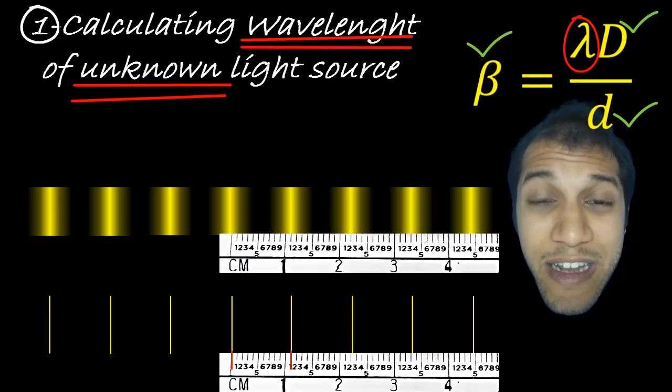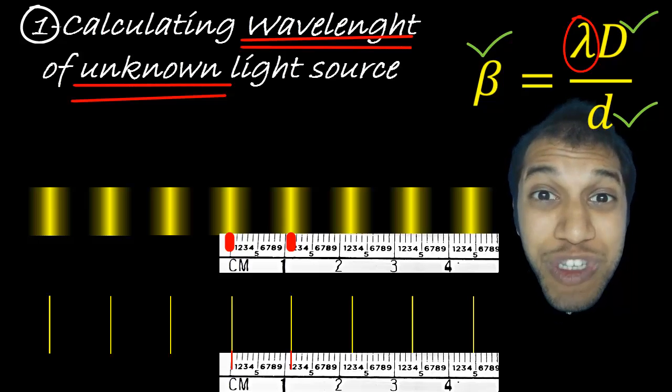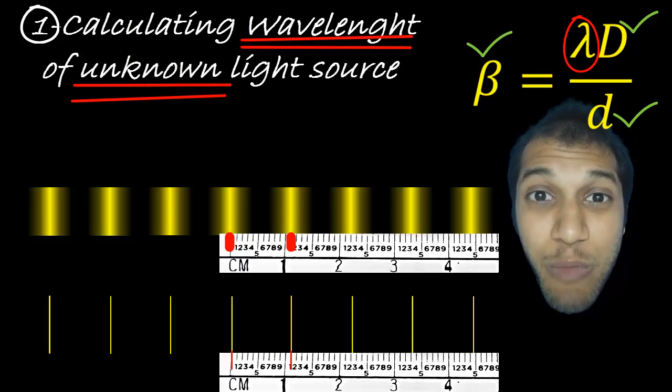In the double slit, it is smeared because it is spread over. So it's not so easy to lock on to where exactly the position of the maxima is. But in the grating, it is very sharp. And so the precision increases. And we have more precise answers now.